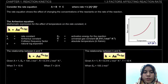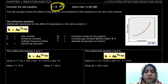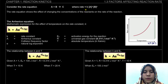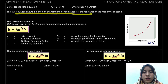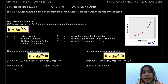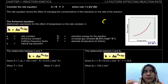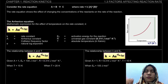Looking at page 22, consider the rate equation. For a given equation, we can write down the rate law. The rate law is equal to K, the rate constant, times the concentration of the reactant raised to some power. That power refers to the order of the reaction. The rate equation shows the effect of changing the concentration of the reactants on the rate of reaction. We also know that catalyst, temperature, size, and pressure affect the rate of reaction — those are the factors of reaction rate.